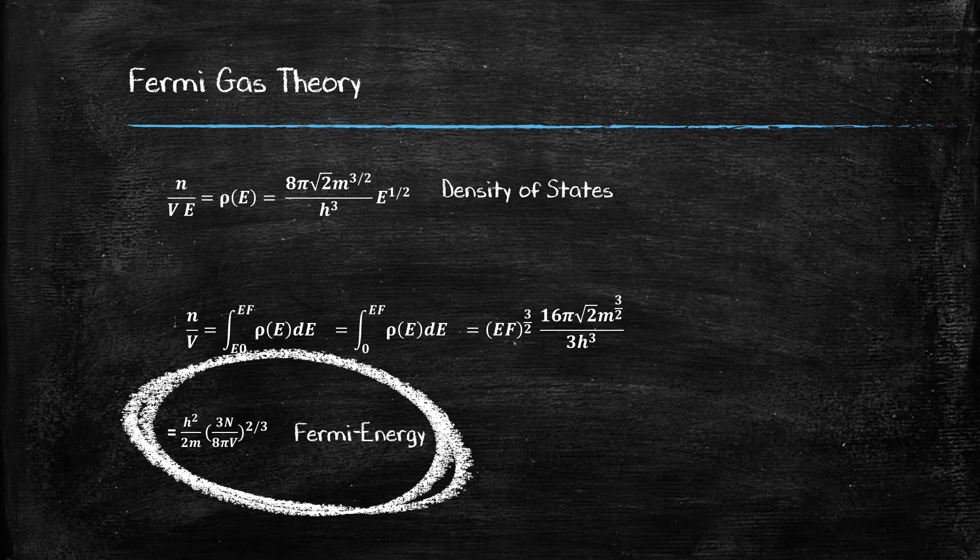This Fermi energy is given by the equation h squared over 2m times 3n over 8πv, to the power of 2/3, where h is Planck's constant, m is the mass of the electron, n is the number of particles, and v is the volume. As we expect, the energy of the topmost fermion, which is what the Fermi energy gives, is dependent on the number of fermions in the system and the mass of the fermion. This energy corresponds to the topmost energy level filled when the temperature is at absolute zero, without accounting for interactions or spin.